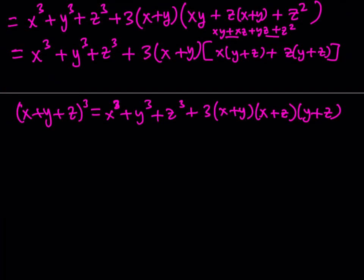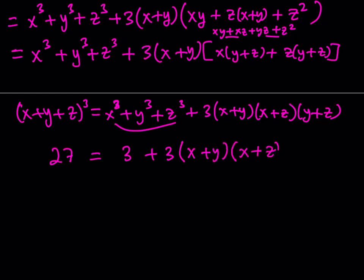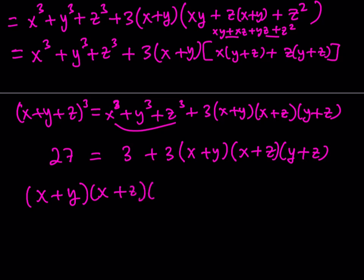We know x plus y plus z equals 3, so x plus y plus z cubed is 27. We also know the sum of cubes is 3. So subtracting 3 and dividing by 3, we get: x plus y times x plus z times y plus z equals 24 divided by 3, which equals 8.